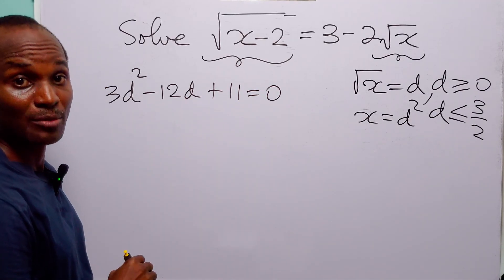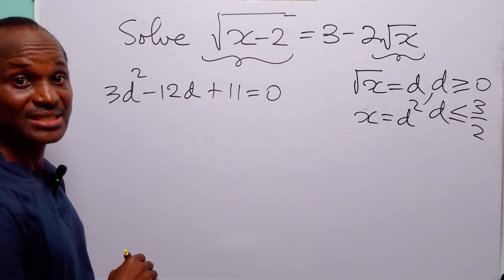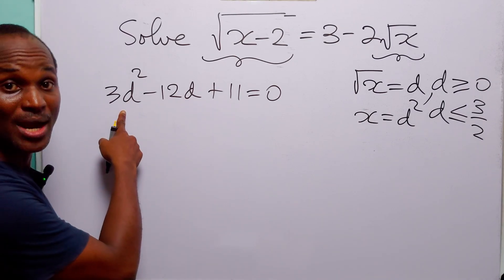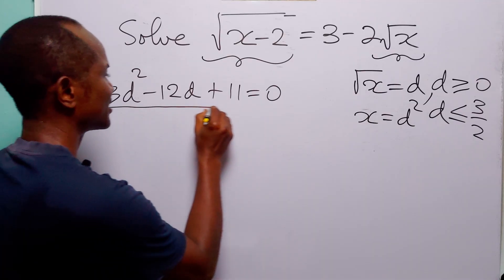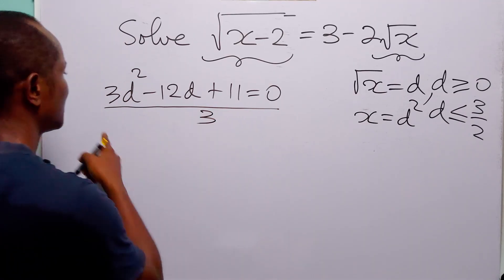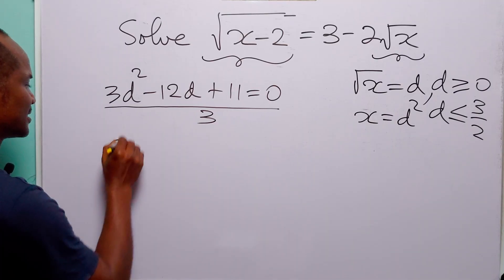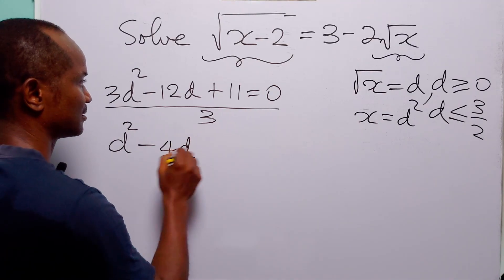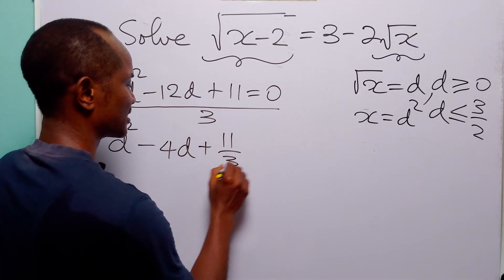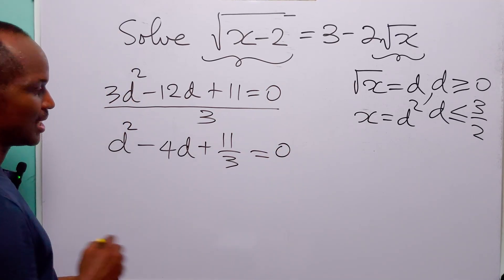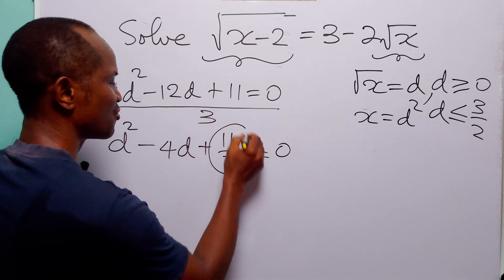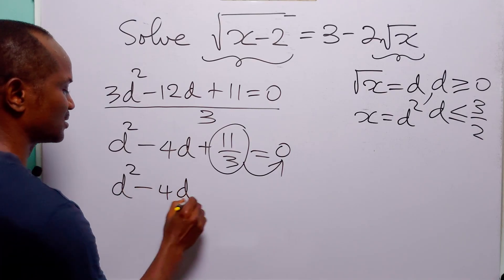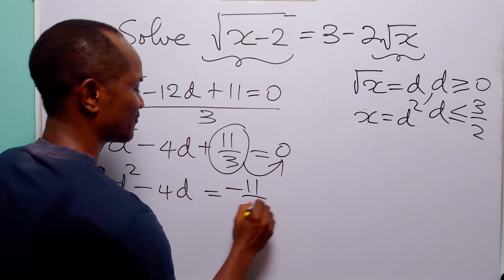We cannot solve this quadratic equation by factorization, so let us use the completing the square method. The first thing we are going to do is make sure that the coefficient of d squared is 1, so we are going to divide through this equation by 3. This gives us d squared minus 4d plus 11 over 3 equals 0. The next step is to move this constant term over to the right-hand side, so we have d squared minus 4d is equal to minus 11 over 3.